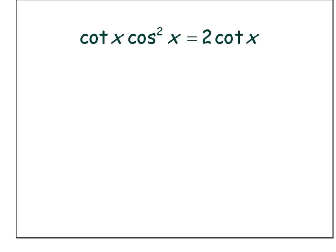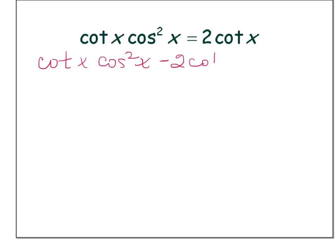In this example we have cotangent x times cosine squared x equals two times cotangent x. Because we have terms with x on both sides of the equation, I will need to move the term 2 cotangent x to the left side so that all of the terms that have x are gathered together on one side. When I do that, I'll have cotangent x times cosine squared x minus two times cotangent x equals zero.